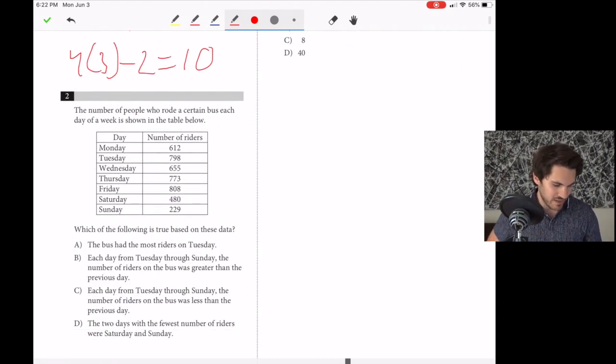Number two, the number of people who rode a certain bus each day of the week is shown in the table below. Which of the following is true based on these data? A is false because the bus did not have the most riders on Tuesday. B is false, C is false. And D, the two days with the fewest number of riders were Saturday and Sunday. Those are indeed the days with the fewest riders, so D is our answer.